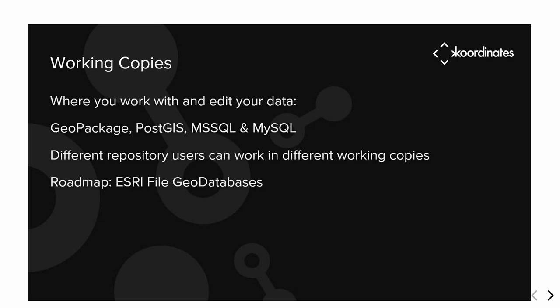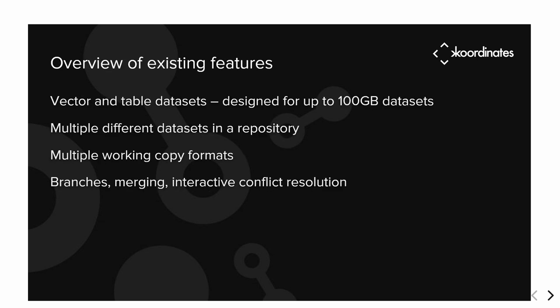The concept of working copies in CART is where you work with and edit your data. We support GeoPackage, PostGIS, Microsoft SQL Server, and MySQL — tables and vector datasets — and different users of the same repository can work in different ecosystems and formats. Last year we were at vector and table datasets up to about 100 gigabytes each, with multiple datasets in a repository, multiple working copy formats, branching, merging, and interactive conflict resolution. If two people edit the same feature, CART will help you walk through and decide — one or the other or a hybrid — for geometries and attributes.